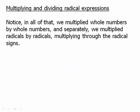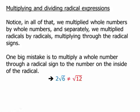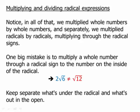Notice, in all of that, we multiplied whole numbers by whole numbers and separately, we multiplied radicals by radicals, multiplying through the radical signs. One big mistake is to multiply a whole number through a radical sign to the number on the inside of the radical. For example, if we had 2√6 to multiply that to get √12. Again, this is the type of mistake it's very easy to make if you're under pressure. The big idea here is keep separate what's under the radical and what's out in the open.